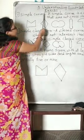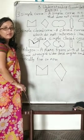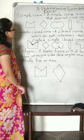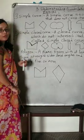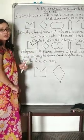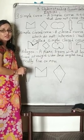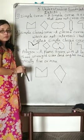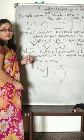Now we are going to see Exercise 3.1. In that, some figures are given and we have to identify which figures are the simple curve, closed figure, simple closed curve, polygon, concave, or convex. These are the questions. We will go step by step — first we will see the definitions, and then identify which figures are the simple curve, simple closed curve, or polygon.